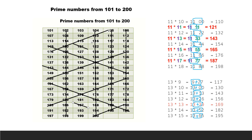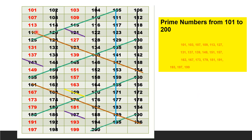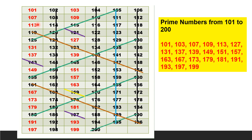Next, cross out multiples of 13. 13×9 = 117 — already crossed. 13×10 = 130 — even, already crossed. 13×11 = 143 — already crossed. 13×12 = 156 — even, already crossed. 13×13 = 169 — cross that out. 13×14 = 182 — even, already crossed. 13×15 = 195 — already crossed. All numbers are now crossed out. The leftover numbers shown in red are the prime numbers from 101 to 200, and there are 21 prime numbers in total.